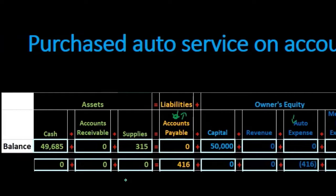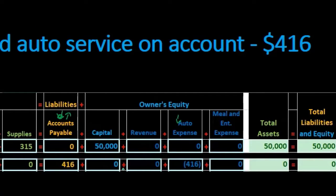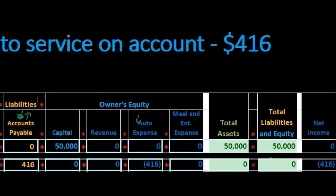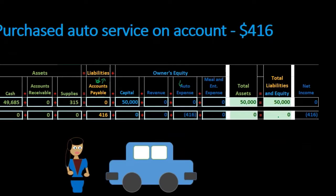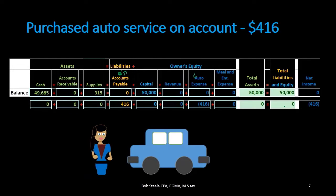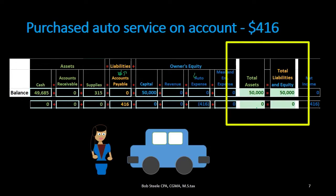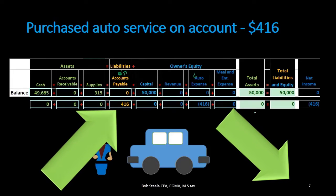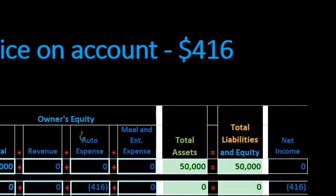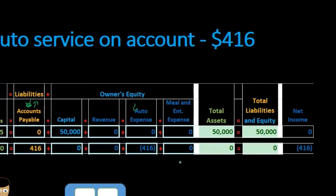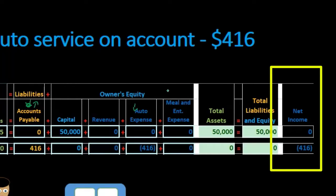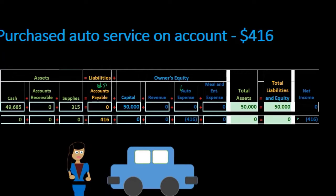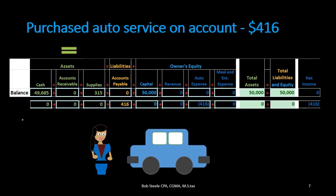Assets stay the same; liabilities increase and capital decreases, so total liabilities and equity remains the same. Accounts payable liability went up and expense brings equity down — they offset each other on the right side. There is an effect on net income: the expense reduces it. Net income equals revenue minus expenses, so it goes down. Note that total equity moves in the same direction as net income — when net income goes down, total equity goes down as well.